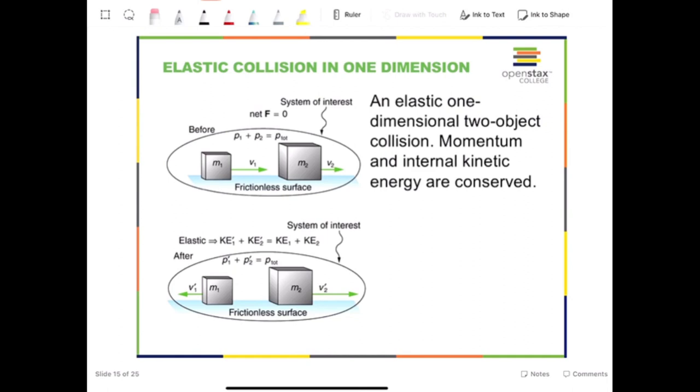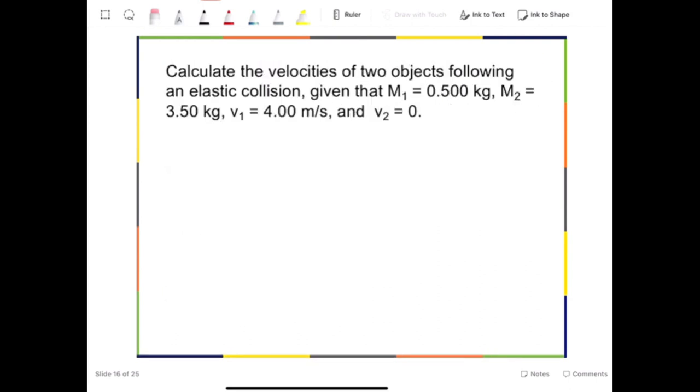In this section, let us discuss the elastic collision in one dimension, which means that the velocities of both objects are always in one line. Let us calculate the velocities of two objects in an elastic collision. In this problem, we are given the two objects in terms of their masses and their initial velocities.